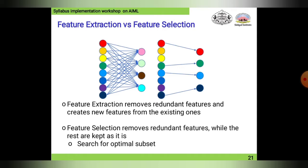Feature selection will select only the data required for further operations. For example, if we want data from 1 to 200 and among those we only need even values, that is feature selection. Feature extraction removes redundant features and creates new features from existing ones — a combination from a probabilistic manner. Feature selection removes redundant features while keeping the rest as-is.